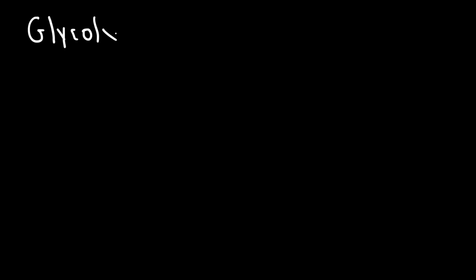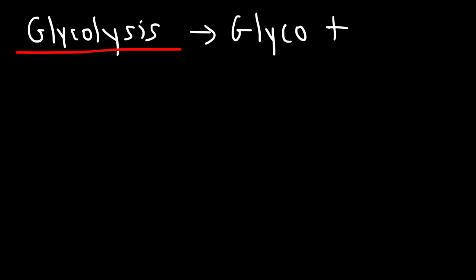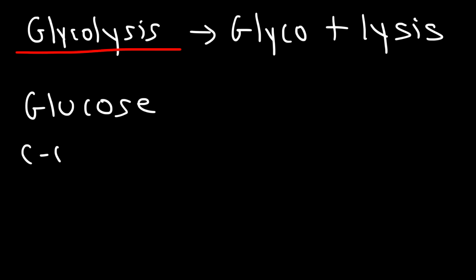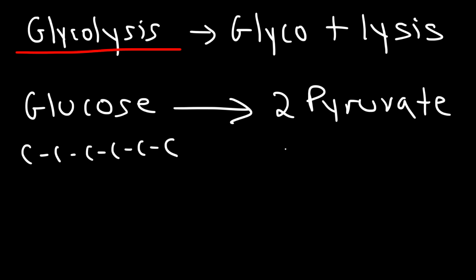In this lesson we're going to talk about something called glycolysis. If we break down the word, glyco plus lysis — lysis means to split apart and glyco is associated with the word sugar. So glycolysis means you're splitting apart a glucose molecule. Glucose is a six-carbon molecule and in glycolysis glucose will be split apart into two molecules of pyruvate, each representing a three-carbon molecule. That's the basic idea behind glycolysis.